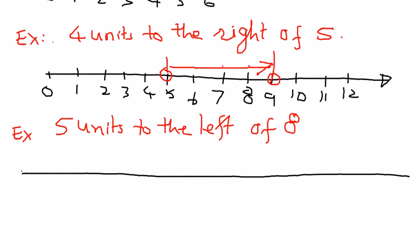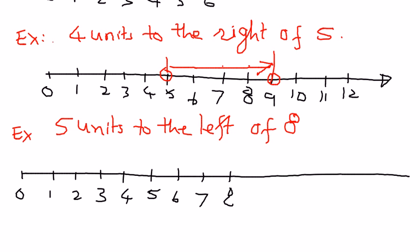We'll draw the number line and start with 0, then put some numbers: 1, 2, 3, 4, 5, 6, 7, 8, 9, and 10. If we need more numbers, we can always pick them up. We put an arrow indicating that more numbers can be represented as we go.